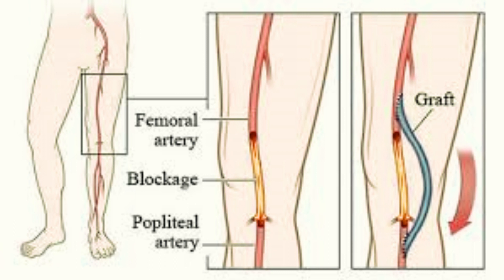4. Bypass surgery. For more severe cases of PVD where multiple arteries are blocked, bypass surgery may be necessary. This involves using a graft to reroute blood flow around the blocked arteries, restoring blood supply to the affected limb.